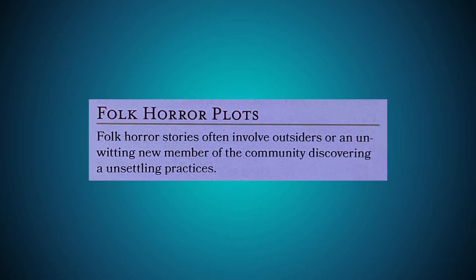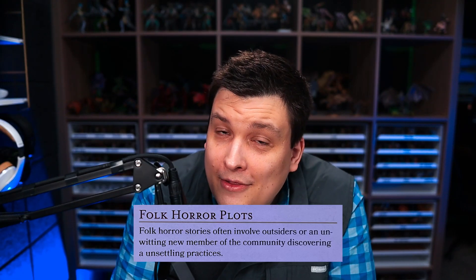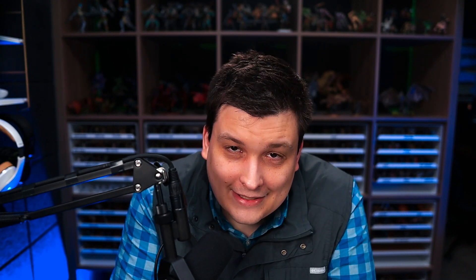Folk horror stories often involve outsiders or an unwitting new member of the community discovering unsettling practices. The folk horror plots D8 list includes: recover a missing villager who ran away to escape the local cult; hunt down the monster blamed for causing a blight — a unicorn meant to serve as a sacrifice; discover why anyone entering the city on horseback is imprisoned and sentenced to death; help a cult summon a fiend to combat an impending greater evil; defeat a violent hag protected by everyone in town and called Grandmother; escape an estate after the residents adopt the party and refuse to let them leave; learn why the characters bear uncanny resemblances to the founders of an underground village; and slay a dragon to prove a character is the prophesized chosen one.